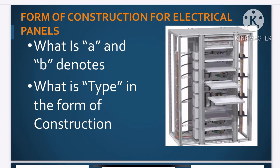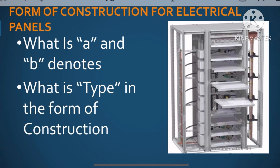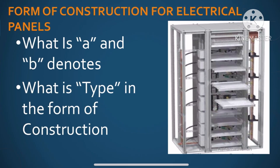Hi friends, welcome to my another video. This is part 4 in the series on form of construction for electrical panels. In the last video, I covered what A and B denote in the form of construction, and also what is type 1, type 2, type 3, and type 4. In this video, I will cover what is type 5, type 6, and type 7.